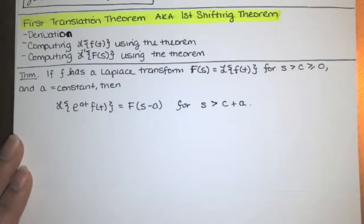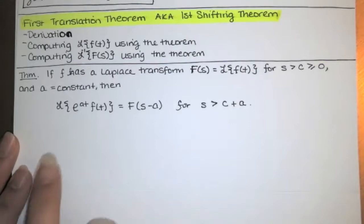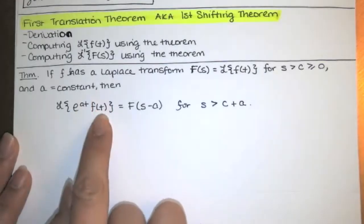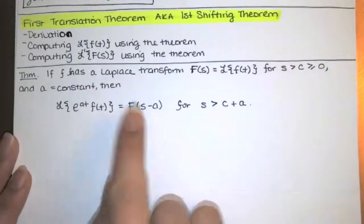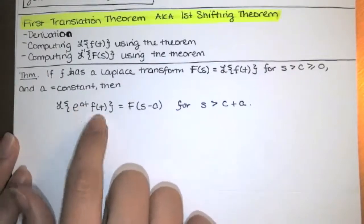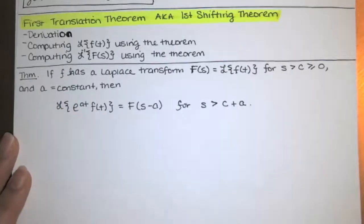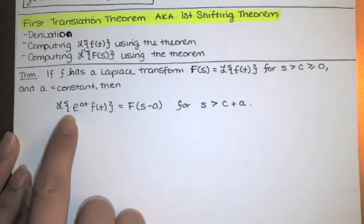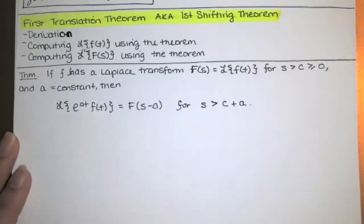If you're wondering why you would ever have to use this theorem, here's why. If you have e to the at times f of t, and you know the Laplace transform of f of t, this theorem can be used to find that transform. If you already have e to the at times f of t in your table of Laplace transforms, there's no need for this theorem. But if f of t is somewhat complicated and we don't have e to the at times f of t in the table, then it would be appropriate to use this theorem.